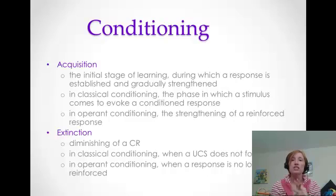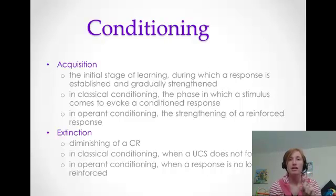Extinction occurs when the conditioned response stops happening — we say it becomes extinct. This happens when the unconditioned stimulus no longer follows the conditioned stimulus. So I stop spraying Justin when I say 'ball.' I say another series of words including 'ball' multiple times without spraying him. Because the association is no longer being made, he's starting to overcome it — it's becoming extinct. So if I see Justin in the kitchen later and say 'ball,' he's probably not going to flinch because he's losing that association.